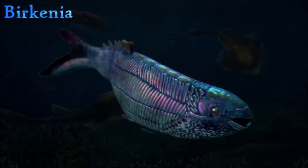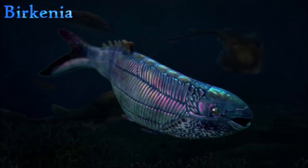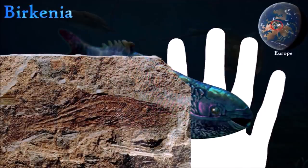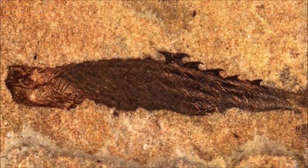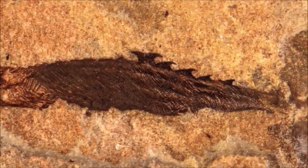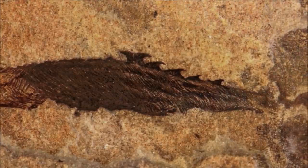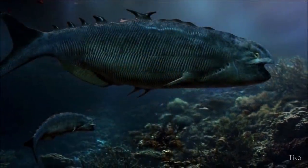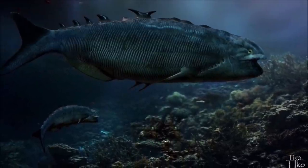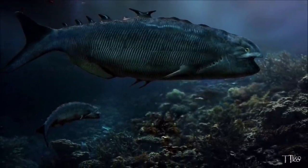The small jawless fish Birkenia had a laterally compressed, fusiform body covered in elongated scales arranged in distinct rows; those on the hind dorsal flanks sloped down and back instead of down and forward. Large scales ran along the top of the body — some pointed forward, others backward — and a double-headed scale in the middle pointed in both directions. Birkenia had a well-developed anal fin and small eyes with a single nasal opening between them. It lived in fresh water and was an active swimmer that fed on detritus.